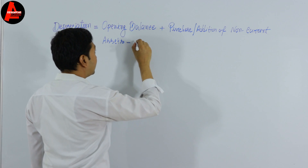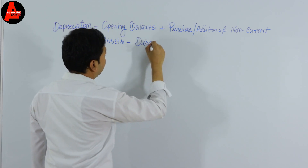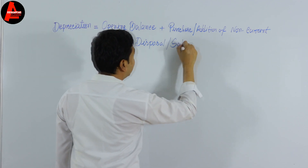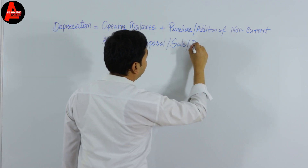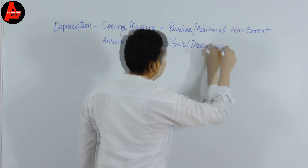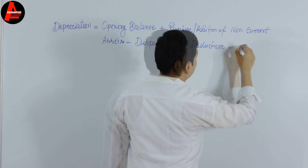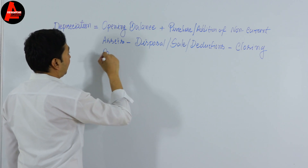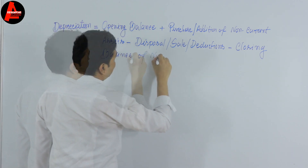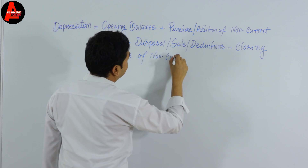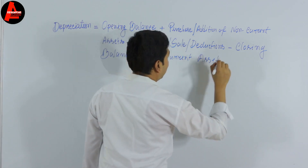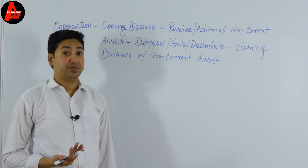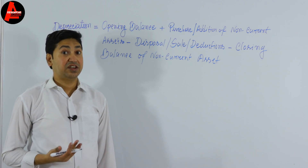Then minus disposal or sale of non-current assets, and minus the closing balance of the non-current asset. If you can remember this formula, it will be quite simple for you to calculate depreciation using the revaluation method.